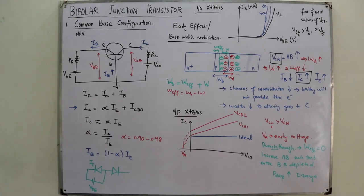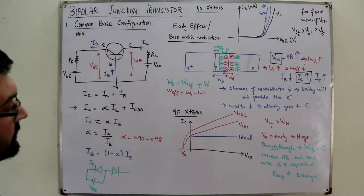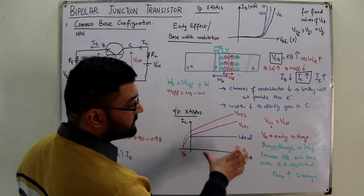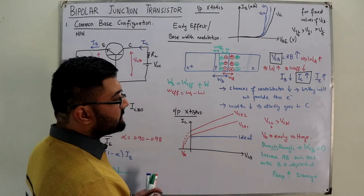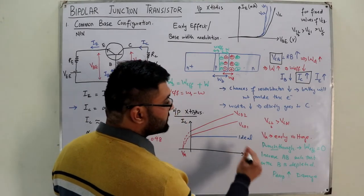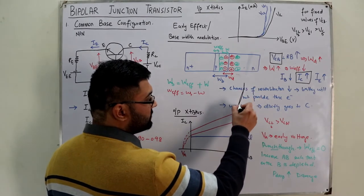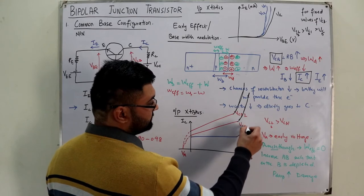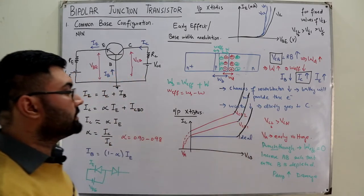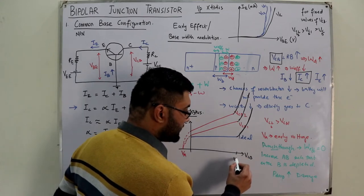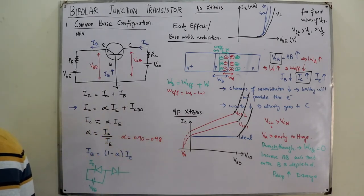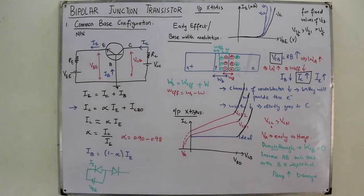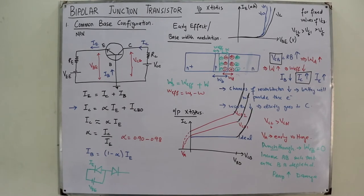Another phenomenon is breakdown. With increasing VCB — which is a reverse bias potential — after a certain level, a breakdown occurs and the current rapidly rises. This breakdown voltage is the maximum VCB the device can handle. When IE = 0 (emitter open-circuited), IC = ICBO only.